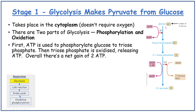Glucose, which is six carbon, receives two ATP, giving up its phosphate. That turns into hexose bisphosphate, which is six carbon, and then quickly into two triose phosphate molecules, which are three carbon each. Then four ADP combine with four Pi to form four ATP. Two NAD take their hydrogen to form two reduced NAD. You get two pyruvates, which are three carbon each. Because four ATP are made but two ATP are used, there is a net gain of two ATP.